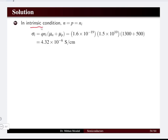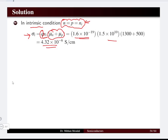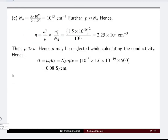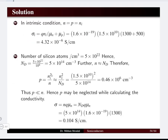Under intrinsic condition at thermal equilibrium, the number of holes equals the number of electrons, which equals ni. We substitute ni into the conductivity equation using q = 1.6×10⁻¹⁹ C and the given μn and μp values to find the conductivity of silicon under intrinsic conditions.